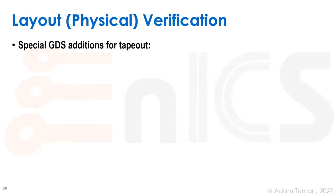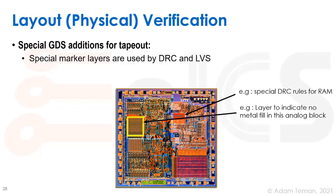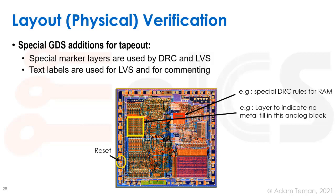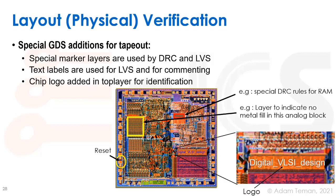When running DRC and LVS on our final GDS, there are some special additions. We put special markers on layers — for example, SRAMs will have special markers indicating push rules for special DRC rules, or markers on analog areas to block metal fill since they're very sensitive. We usually put text labels all over the GDS to mark ports and other features. We also add a chip logo — a special layer that etches into or sits in the top metal — which is used for chip identification and orientation, so the package house knows the chip orientation.